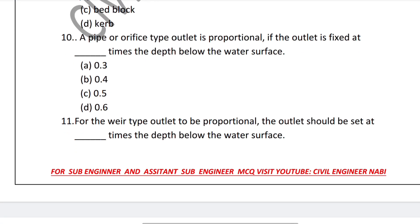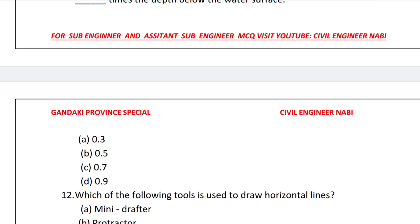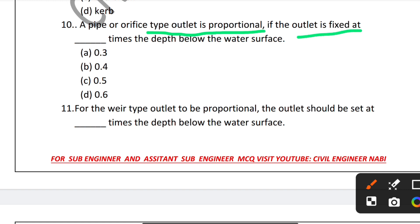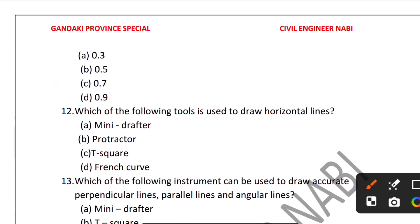Question 11: For a weir type outlet to be proportional, the outlet should be set at what times the depth below the water surface? While the orifice type outlet is fixed at 0.3 times, for the weir type outlet the answer is 0.9 times. Option 0.9 times is the correct answer.